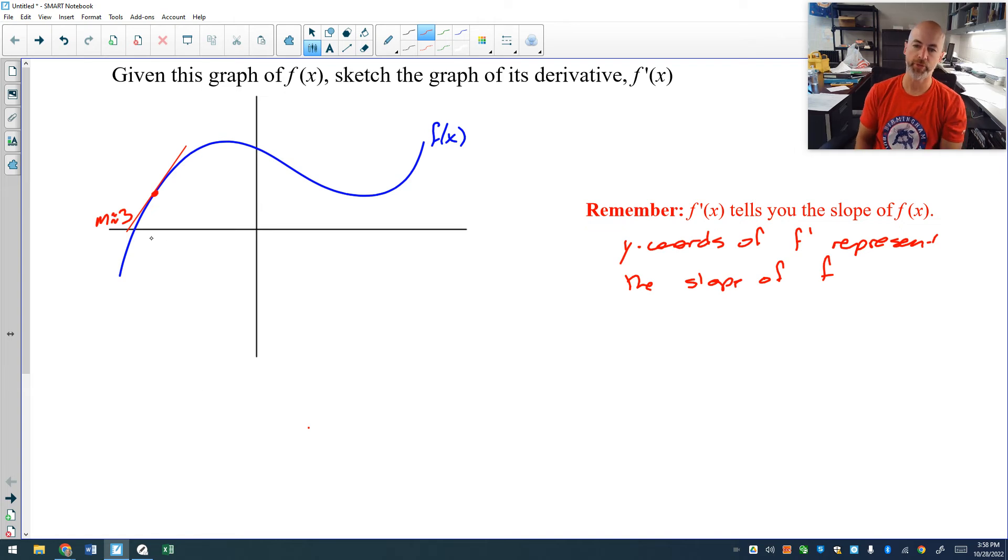So if you think that is a slope of three, then at that x-coordinate, whatever that x-coordinate is, you would need to go up to three on your y-axis, and that is where you would plot the y-coordinate for your derivative. Well, we're not going to look at it that detailed. We're not going to try to distinguish between a slope of three and a slope of two and a slope of one or anything like that.